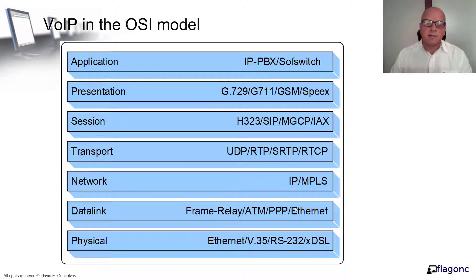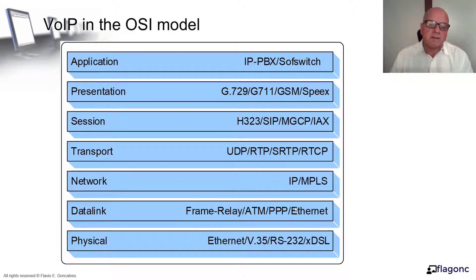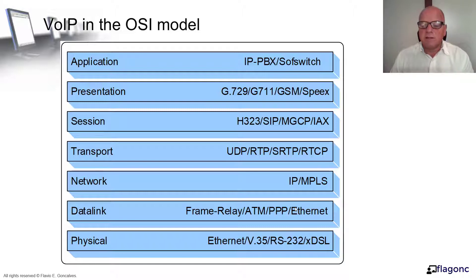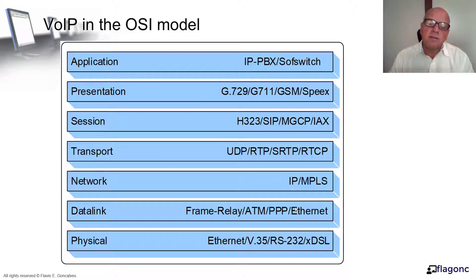In the data link layer, you have frames — technologies that in-frame a packet. The most common is Ethernet, but you also have Frame Relay and PPP, point-to-point protocol. In most cases these days, we're using a lot of Ethernet because most data transmission technology has moved to Ethernet in recent years. Even fiber is using Ethernet framing in the data link layer, and wireless also uses Ethernet framing for the data link layer.